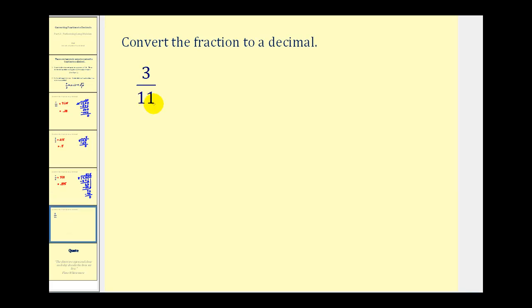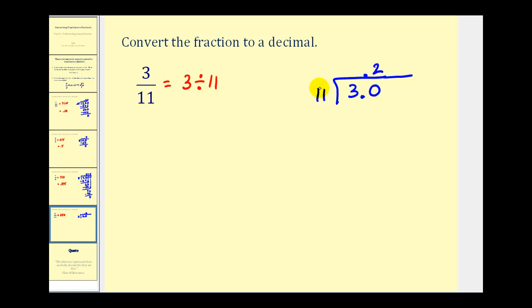Let's try one more. Here we have three-elevenths, which means three divided by eleven. We set this up in long division form: three divided by eleven. There aren't any elevens in three, so we add our decimal point, move it up, and start adding zeros. How many elevens are there in thirty? That would be two. Two times eleven is twenty-two. We subtract, giving us eight. Add a zero and bring it down. How many elevens in eighty? That would be seven. Seven times eleven is seventy-seven. We subtract, giving us three.